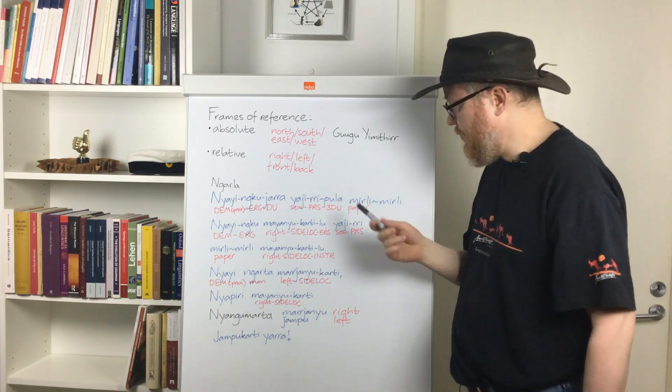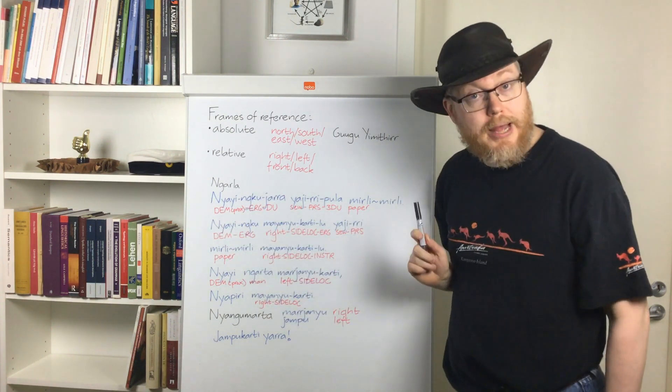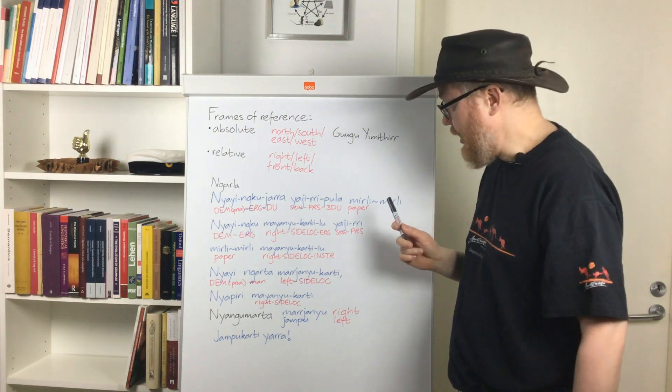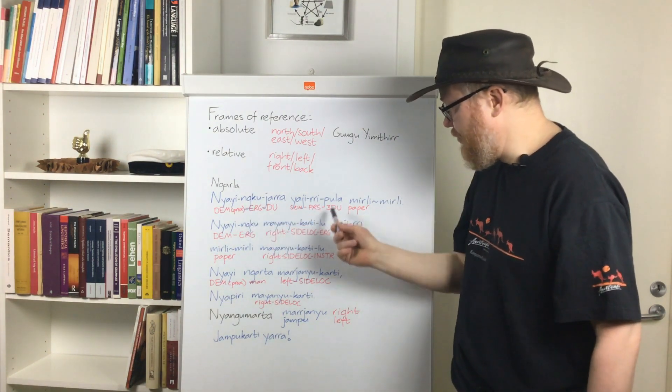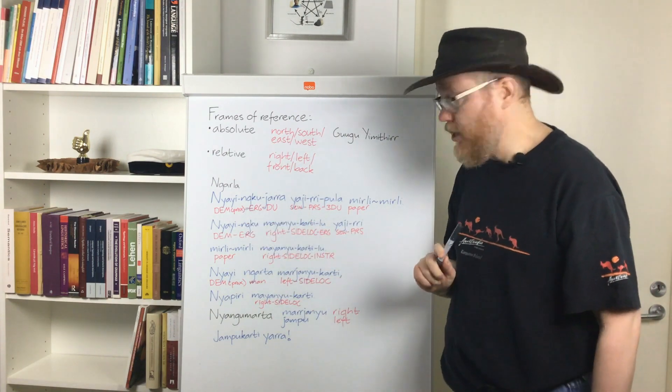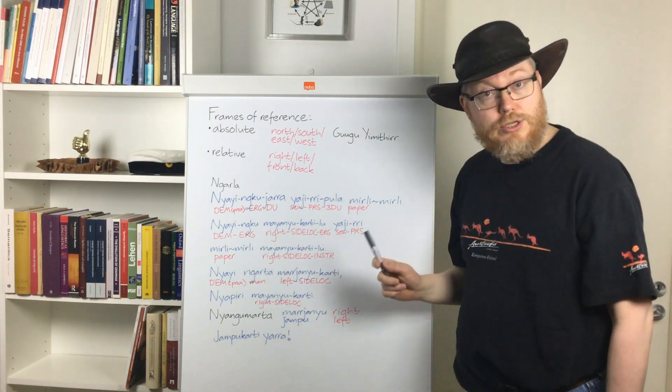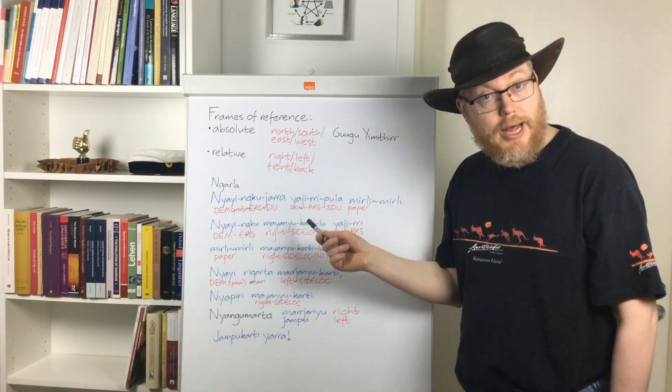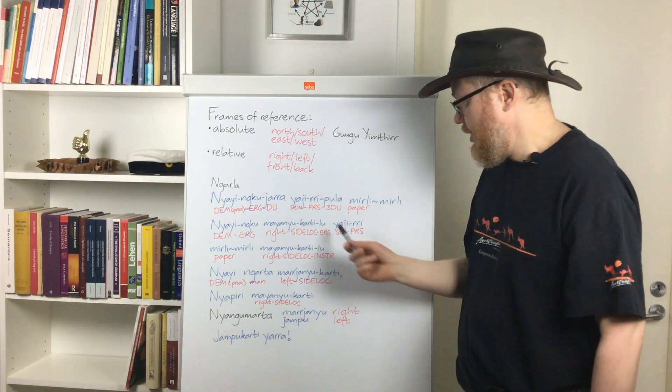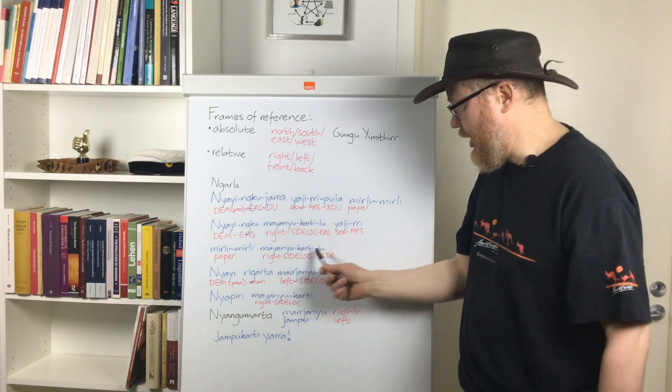Nyayingu majanyukarillu. So, here, these two constituents together make up the subject, which we can tell from the fact that they both take ergative alomorphs. So, nyayi, again, and majanyukarillu. So, this one on the right is what this means. Yadjiiri meri meri is writing, majanyukarillu.